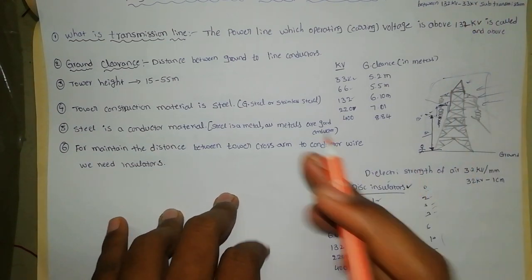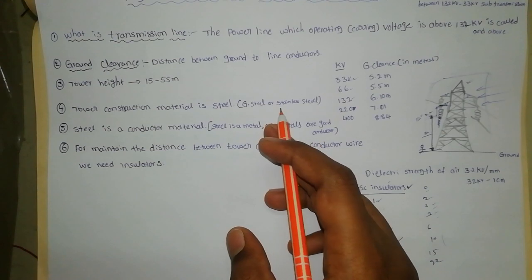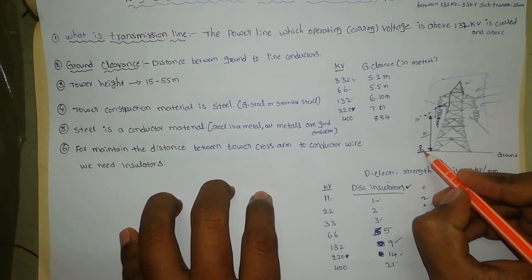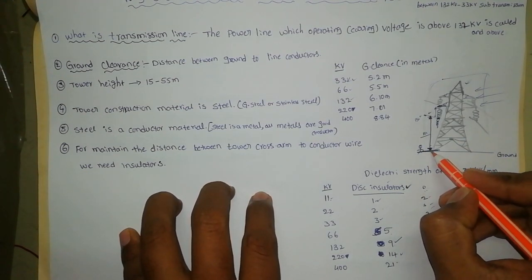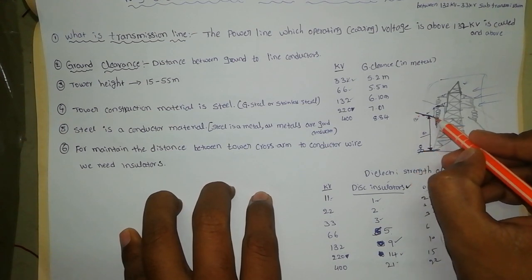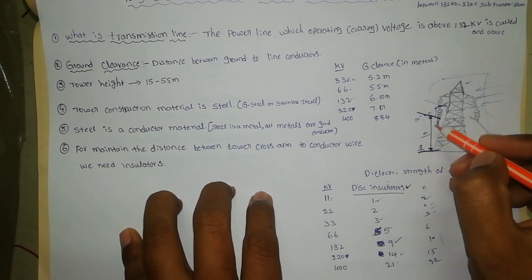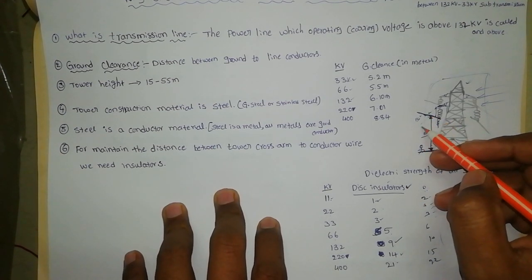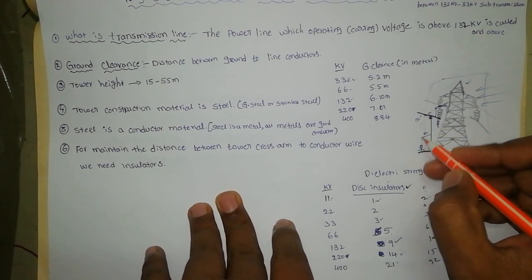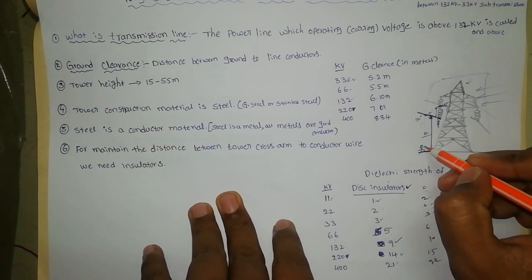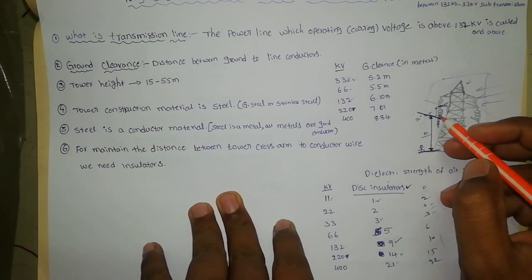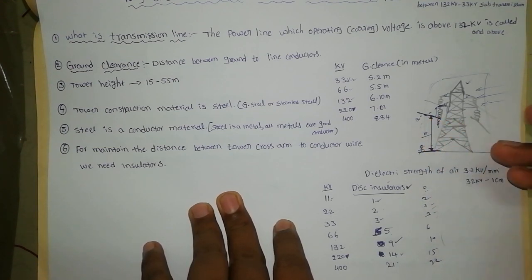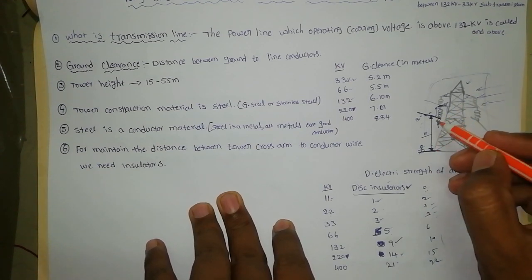Next we need to know about ground clearance. Ground clearance is the distance between the ground and the line conductor — the current-carrying conductor. This distance is important because in rainy season, if someone is roaming around the tower, there is a chance of electric shock due to induction. To avoid this, a safe distance must be maintained between ground and conductor.